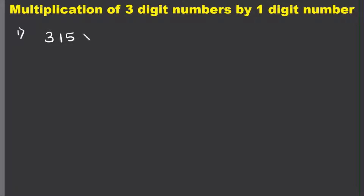Our first example is 315 times 8. When you are given a problem like this where the numbers are written side by side, you need to rewrite it in stack form. The order of the problem doesn't matter — 315 times 8 or 8 times 315 are equal.